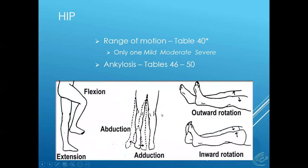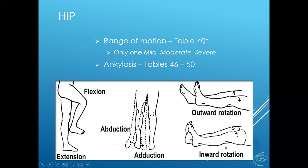For hip ankylosis, depending on the position, you use table 46. If a patient is stuck in 20 degrees of flexion, you get that ankylosis value and that's it — you don't get additional impairment for other planes of motion since there's no other motion by definition. Hip flexion is bringing the knee toward the abdomen; extension goes toward the buttocks. Abduction is the straight leg away from the body; adduction is toward the body. External rotation is outward; internal rotation is inward.